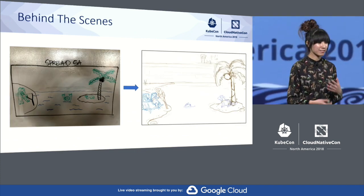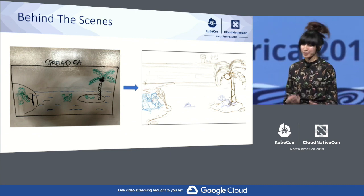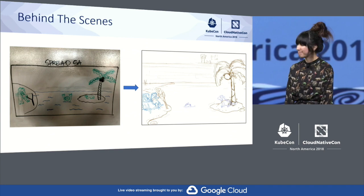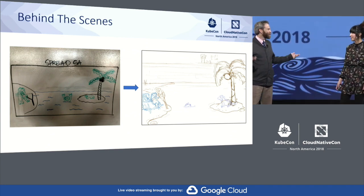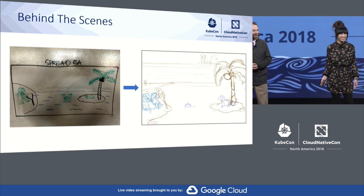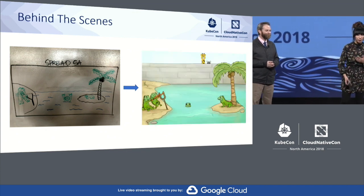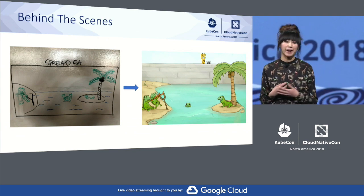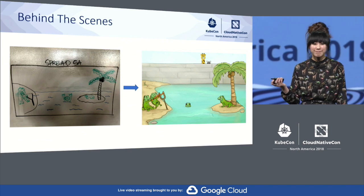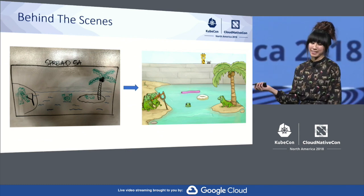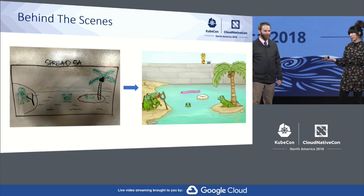Here is our sketch with creatures that look like they're from the Black Lagoon, but they're really meant to be iguanas. It felt a little empty in the pool, so inspired by our colleague Michelle Murali and her love for donuts, I asked Bailey to add in a donut pool toy with rainbow sprinkles, of course.